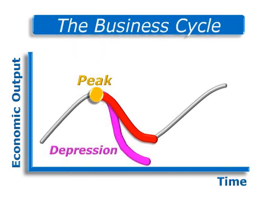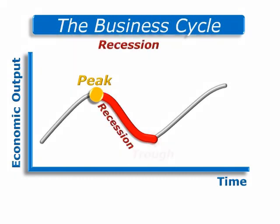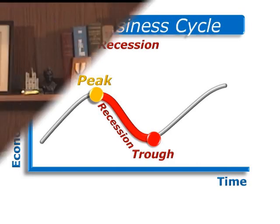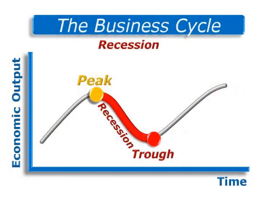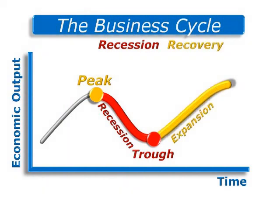A depression is a very severe slowdown. A trough is reached when economic activity bottoms out or stops getting worse. It doesn't mean that everything is okay all of a sudden — it just means that things aren't getting any worse and should be getting better. After the trough, we enter an expansion or recovery when economic activity picks up again. Eventually, this expansion tops out with the next cycle's peak, and we start the process over again.